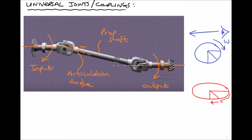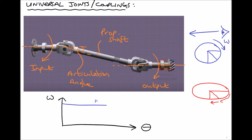Let's add these two pieces of information to a quick sketch of a graph, with angular velocity on the y-axis and angular position on the x-axis. The angular velocity of the input shaft is going to be constant. But the angular velocity of the prop shaft is going to fluctuate — it's going to speed up, moving faster than the input, then slow down, then speed up and slow down again. The reason the angular velocity speeds up and slows down is because it's following an elliptical path rather than a circular path.